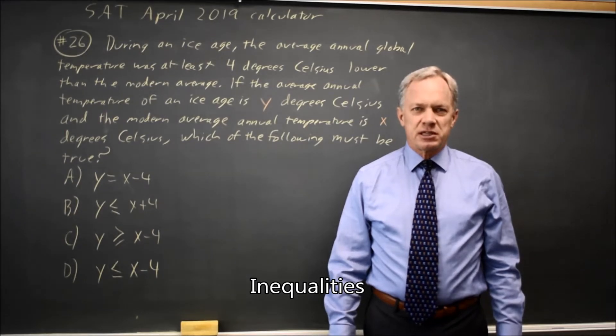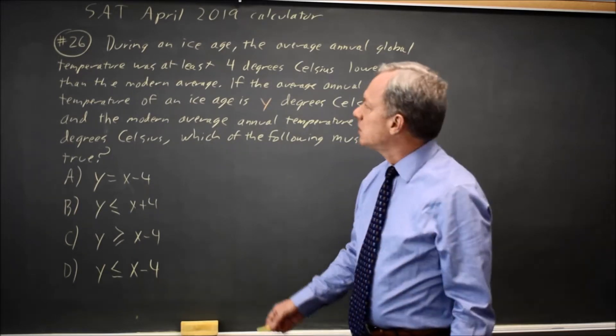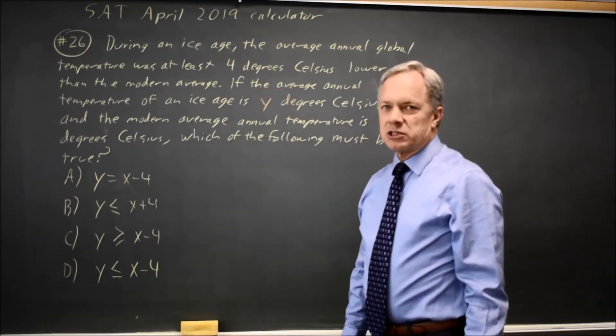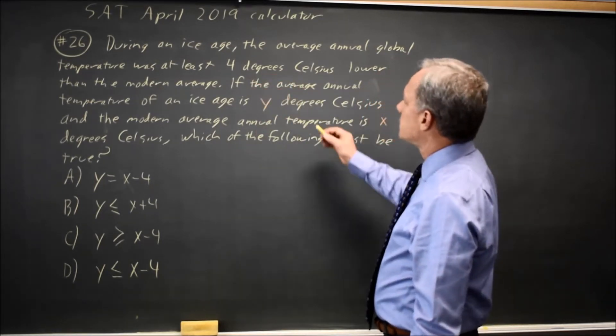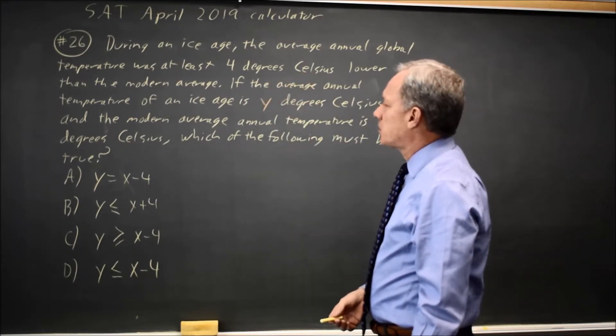This is calculator question number 26 from the April 2019 SAT. College Board asks about average temperatures today and during a recent ice age, and they tell you temperature during the ice age was at least 4 degrees lower than the modern average.